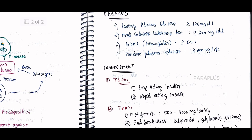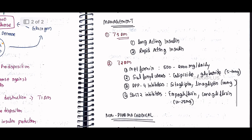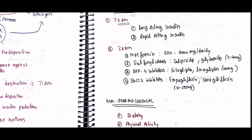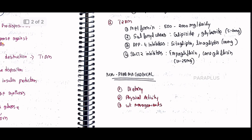Management of Type 1 diabetes includes long-acting insulin and rapid-acting insulin — can you name them in the comments? Type 2 diabetes management includes Metformin, Sulfonylureas, DPP-4 inhibitors, and SGLT-2 inhibitors. Non-pharmacological management includes dietary changes, physical activity, physical workout, and weight management.